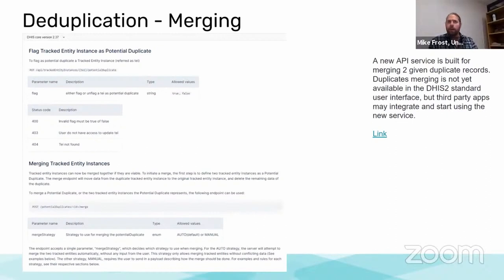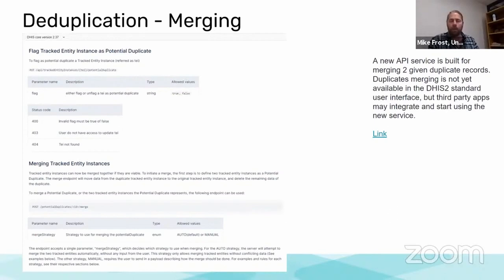We now have an entirely new API service built for merging duplicate records. This will continue to be improved in the 2.38 and 2.39 releases. Right now, we have an API that allows for the automated merging of duplicates, which is documented and available for use.